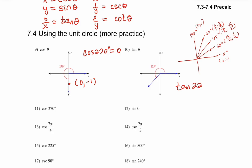Now problem 10: tangent of 225°. This has a 45° reference angle because 180 + 45 = 225, and it is in the third quadrant. In the third quadrant, both x and y are negative, so instead of (√2/2, √2/2) we use (-√2/2, -√2/2). Tangent of anything with a 45° reference always gives ±1. Here two negatives make a positive, so the answer is +1.